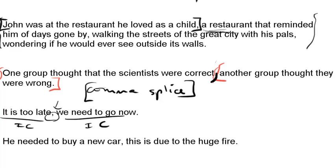Last example: 'He needed to buy a new car, this is due to the large fire.' Again, independent clause, independent clause, only a comma. We need something else. That's a comma splice — that's an error.